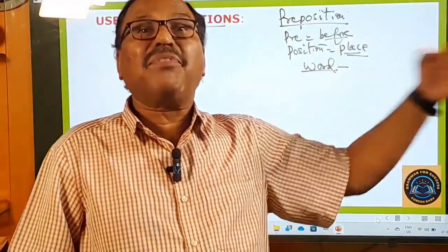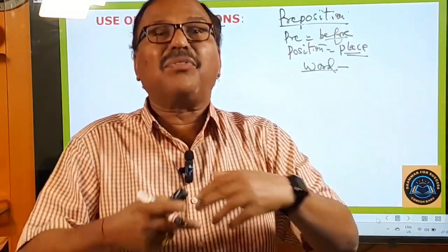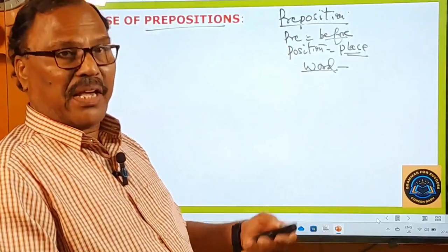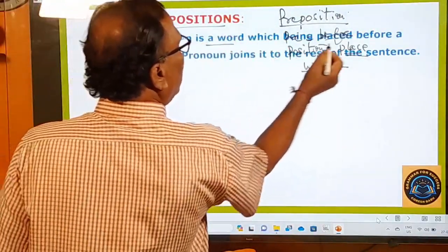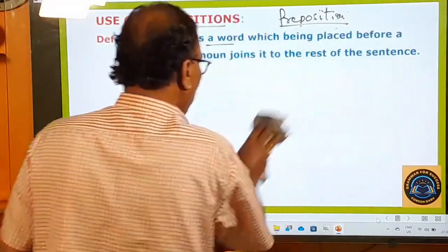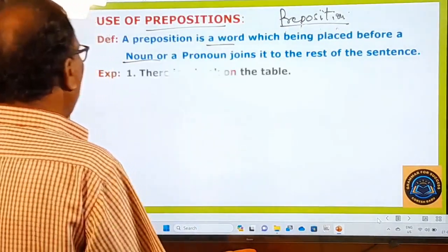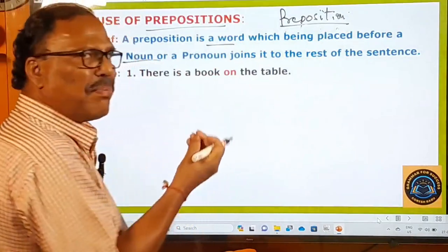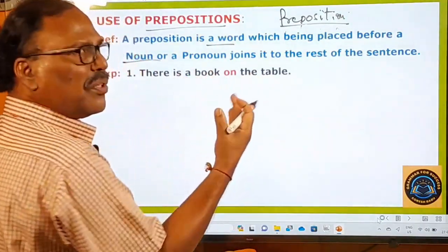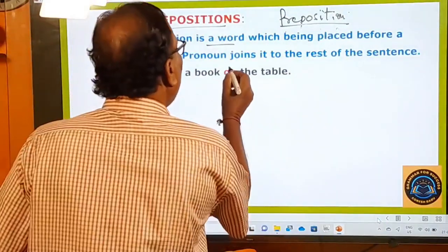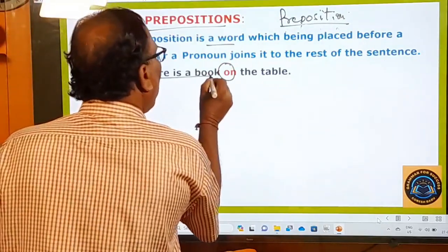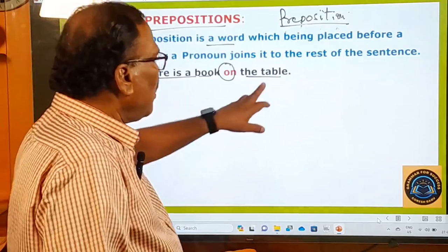A preposition is a word which, being placed before a noun or a pronoun, joins it to the rest of the sentence. For example: There is a book on the table. Here, the word 'on' is placed before 'table', which is a noun. If you remove 'on' from the sentence, 'table' loses its connection — it gets detached. When 'on' is used, 'table' gets attached to the rest of the sentence.